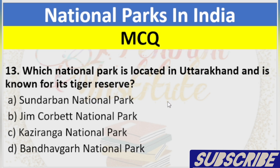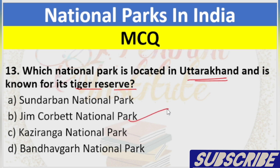Question 13: Which National Park is located in Uttarakhand and is known for its tiger reserve? A. Sundarbans National Park, B. Jim Corbett National Park, C. Kaziranga National Park, D. Bandhavgarh National Park. Answer: B. Jim Corbett National Park.